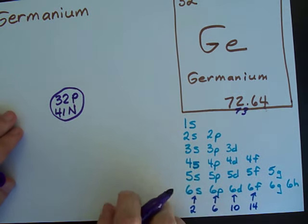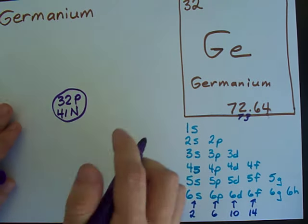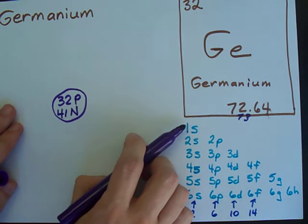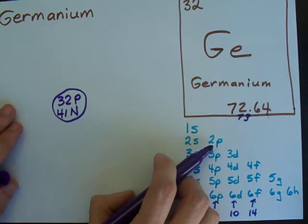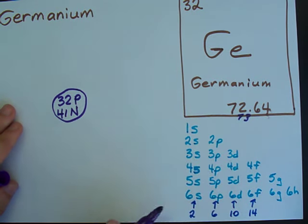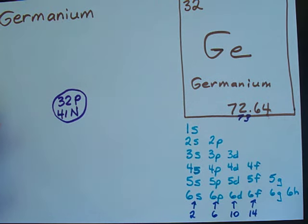Alright, take a look at what I have here. This is a little chart where you have the s's down 1, 2, 3, 4, 5, 6, p's starting at 2, d's starting at 3, and all the 1's and 2's and 3's and 4's are aligned.